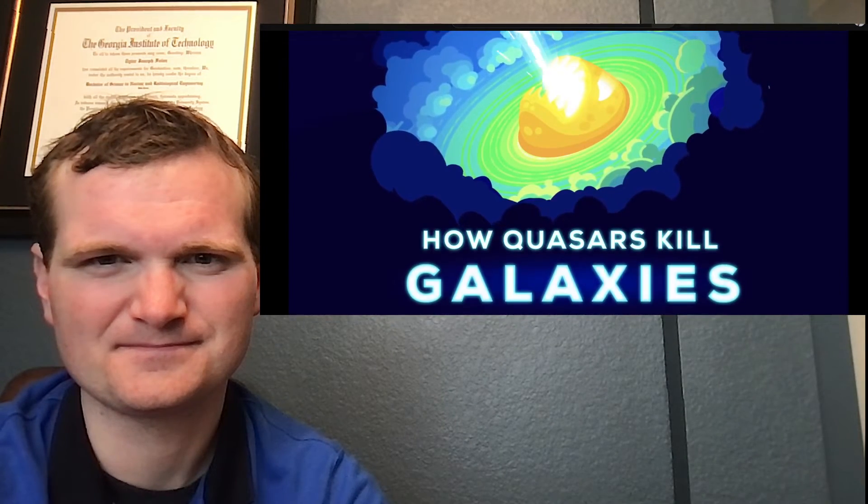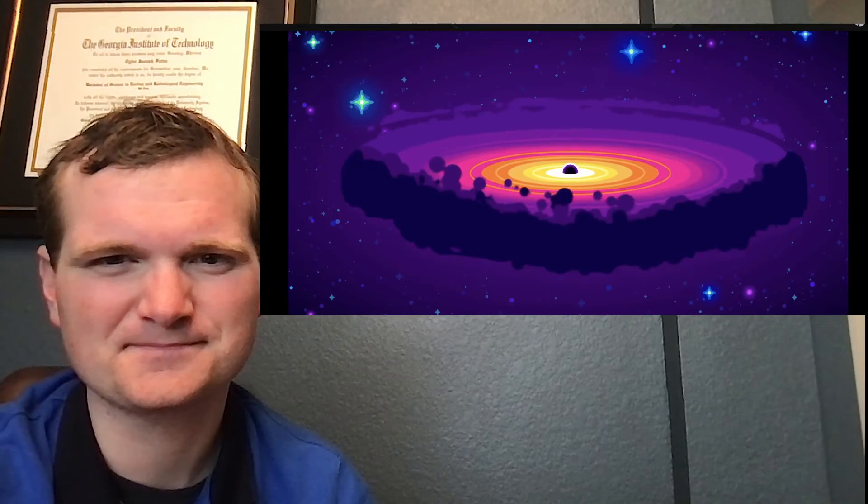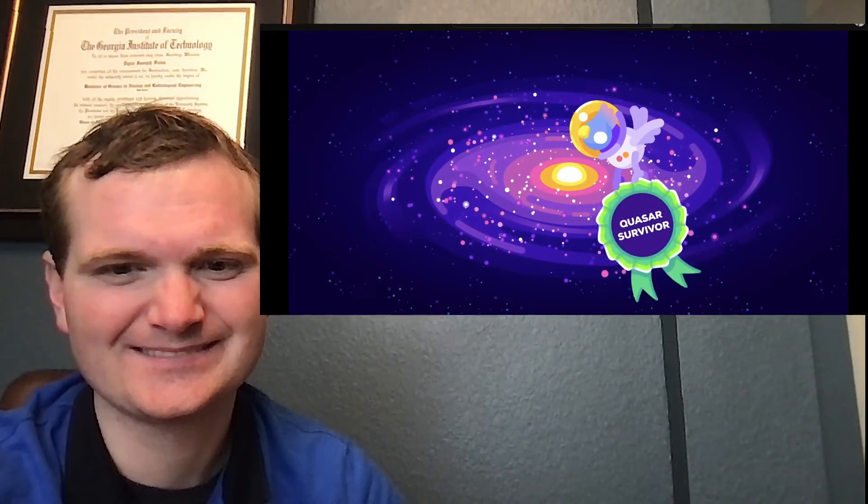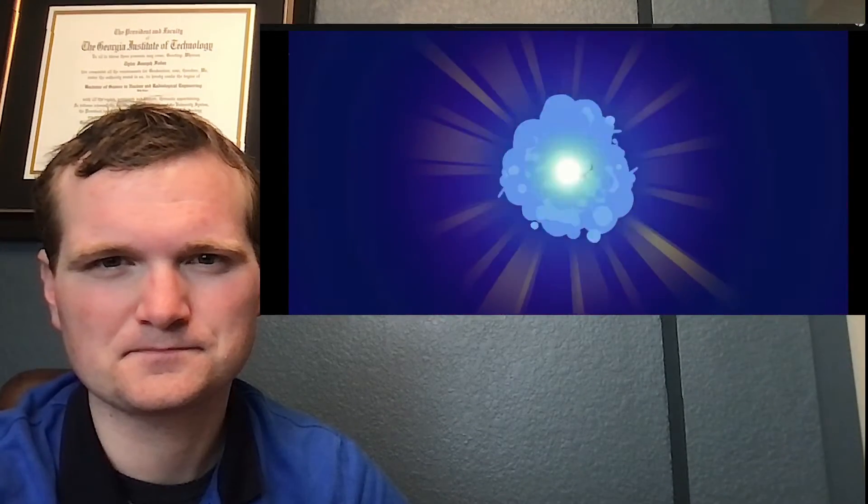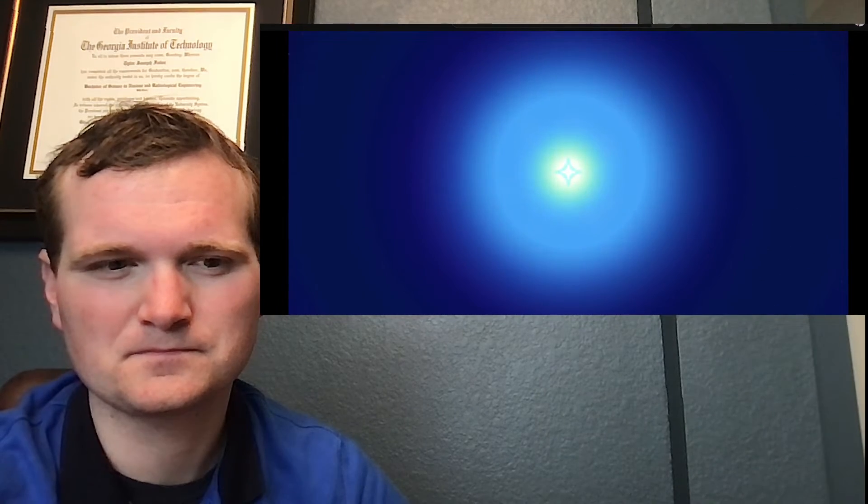How quasars kill galaxies. Okay, maybe killing is a bit of an exaggeration. The galaxy is still there after its quasar turns off, but it will never be the same again. Quasars, being among the hottest and brightest things in the universe, break their galaxies by heating them up too much and stopping star formation. Stars are gas that collapsed in on itself and then got really hot. But in a cloud of gas that's already hot, atoms are moving quickly. When they collide, they hit hard, exerting pressure that resists gravity's squeeze. So hot gas cannot form stars.